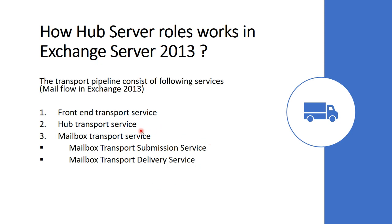Next is the mailbox transport service, which runs on all Mailbox Servers and consists of two separate services: the Mailbox Transport Submission Service and the Mailbox Transport Delivery Service. The Mailbox Transport Delivery Service receives SMTP messages from the hub transport service and connects to the mailbox database using an Exchange Remote Procedure Call to deliver messages. The Mailbox Transport Submission Service connects to the mailbox database using RPC to retrieve messages and submits them over SMTP to the hub transport service. The mailbox transport service does not queue any messages locally.